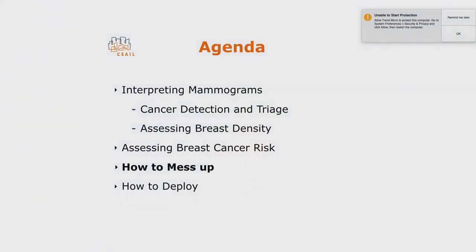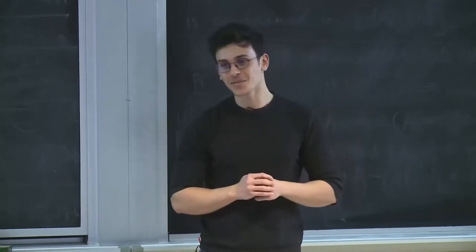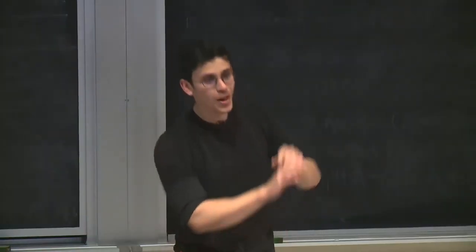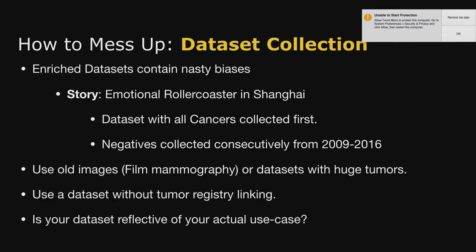Now I'm going to talk about how to mess up - and there are quite a few ways. Following the same sketch, you can mess up in dataset collection (probably the most common by far), in modeling, and in analysis. For dataset collection, enriched datasets are the most common problem you see in this space. If you find a public dataset, there's most likely a 50-50 cancer/not-cancer split, and these datasets can have biases in how they were collected - negative cases from fewer centers, or cases collected from different years.